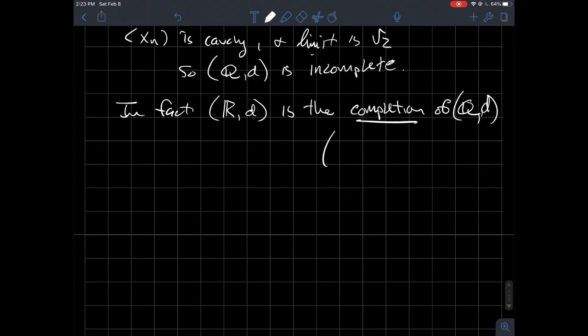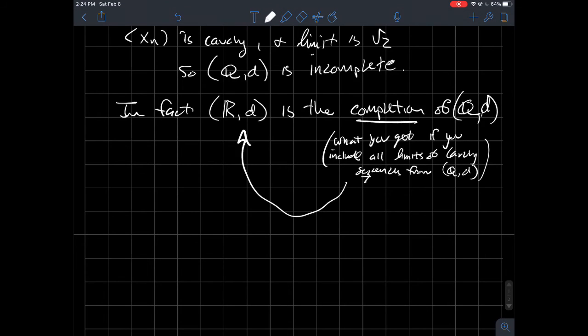So what do I mean by that? Completion is what you get if you include all limits of Cauchy sequences—in my case, from Q. So what if we throw square root of two in there? You could probably guess you could get square root of three in there, and there's decimal approximations to pi and all that good stuff. So they all get thrown in, and what you get at the end of that should just be the real numbers themselves.